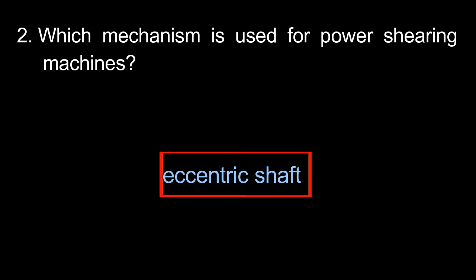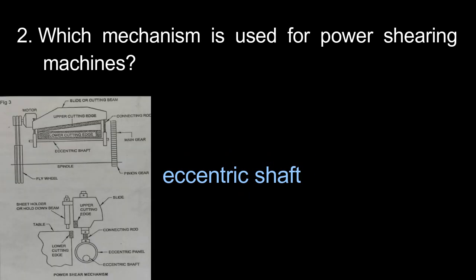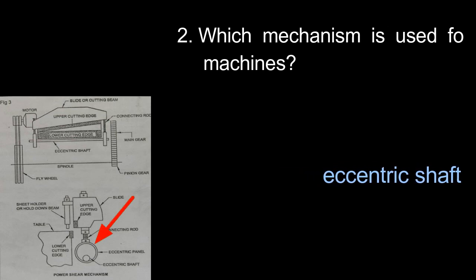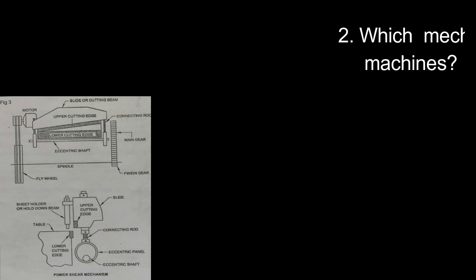This is the normal manually operated idle-shearing machine. This is the movable blade, which uses the eccentric shaft mechanism. This is the eccentric shaft.